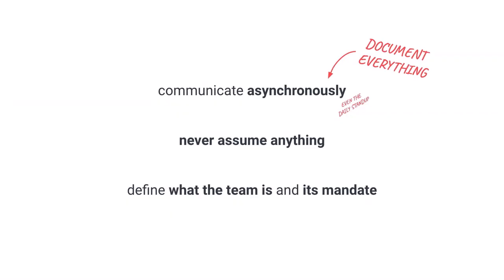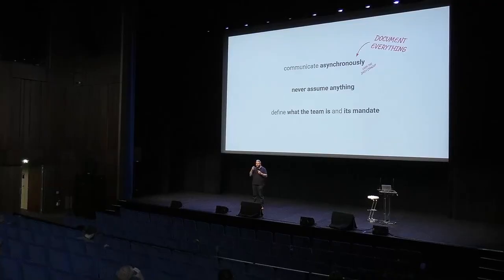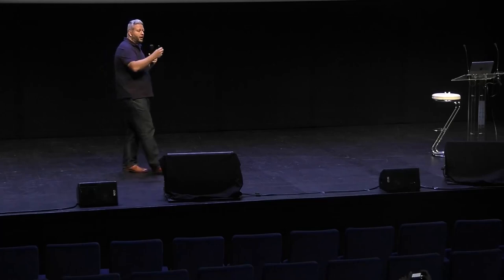This is where the second point appears: never assume anything. When I asked all the engineering and product teams what the key thing distributed teams brought to their mindset, the key answer was never assume anything. Never assume that someone understands or knows what you are doing. Therefore, you need to repeat, ask the question if you do not know, repeat again. Even if it's sometimes too much, it's better so everybody has the same information and the same goals.